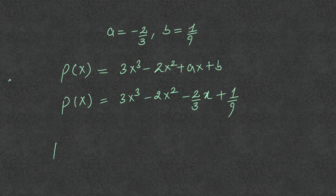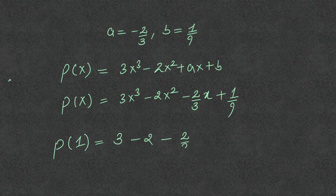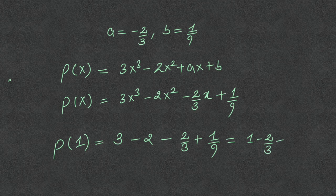Now we calculate p(1) by putting x = 1: 3 - 2 - 2/3 + 1/9, which becomes 1 - 2/3 + 1/9. On solving, p(1) finally equals 4/9.